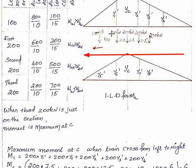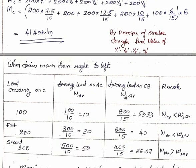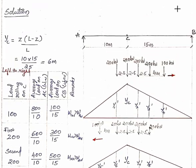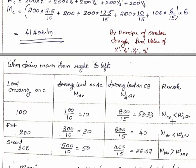Now for the case when the load moves from right to left, the leading load is 100 kN. We check the maximum bending moment at C. With 100 kN crossing: 100 divided by 10 (AC distance = 10, CB distance = 15). The remaining load 800 divided by 15. We then check whether the 200 kN load on AC changes the average load condition.